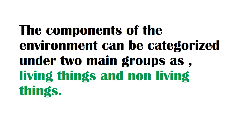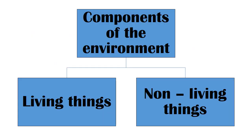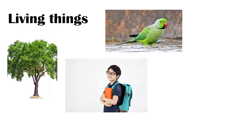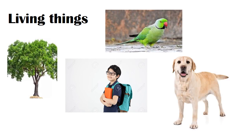The components of the environment can be categorized under two main groups: living things and non-living things. In this hierarchy, I have divided the components into these two groups. Examples of living things: birds, human beings, trees, dog. Let's also see some examples for non-living things.